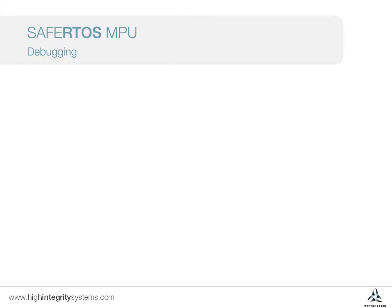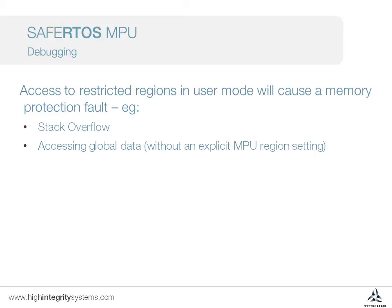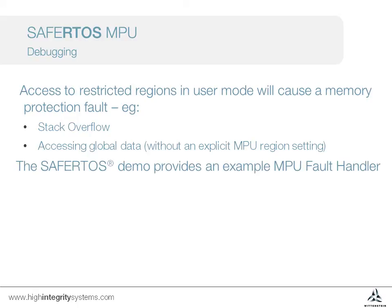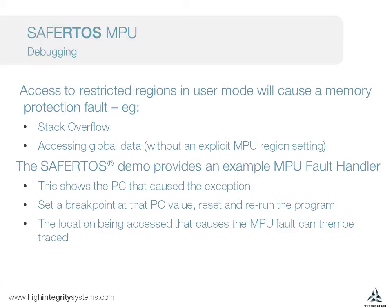When developing application code — in particular if converting existing code to make use of MPU functionality by running in unprivileged mode — it's not unusual to see the MPU exception handler being hit. The two most common causes are stack overflow or trying to access global data that is not within a permitted MPU region. The SafeRTOS demo applications provide an example MPU fault handler, which helps with debugging by showing the program counter value that causes the MPU exception. If a breakpoint is set at this location, it should be possible to examine the registers to work out what address is being accessed and causing the MPU fault. If the memory location being accessed appears to be within the program data section, it can be helpful to cross-reference this with the map file to see which object that data item is from.